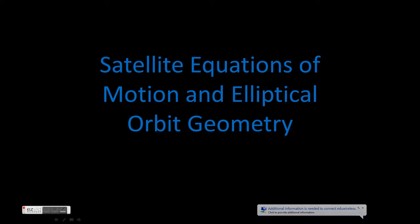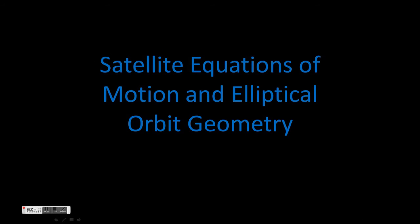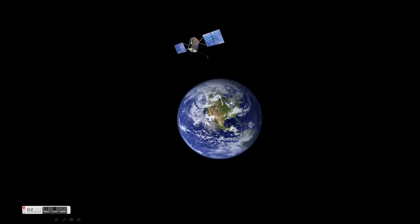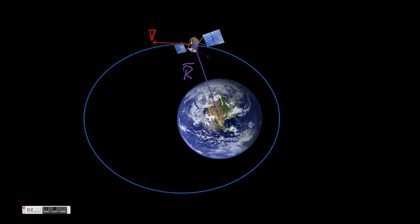Today's lesson covers the derivation of the equations of motion for a satellite in orbit around a much larger body, as well as the basic geometry of the resulting elliptical orbit. We'll start by considering the Earth and a satellite in orbit that looks like a GPS satellite. We'll characterize the state of the satellite using two vectors: the position r and velocity v. Together, these two vectors can be used to define an elliptical orbit of the satellite around the Earth.